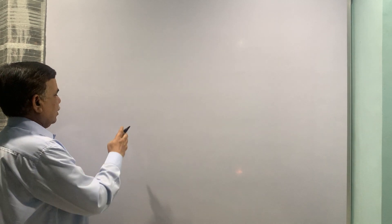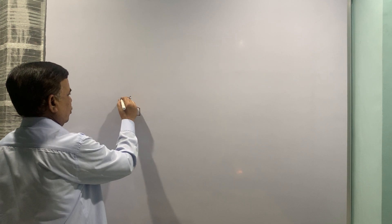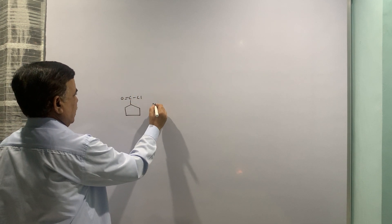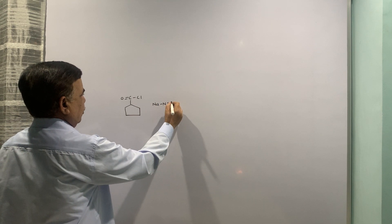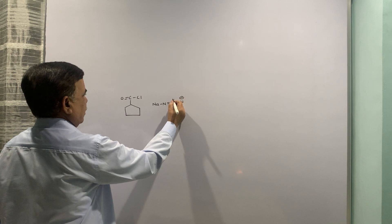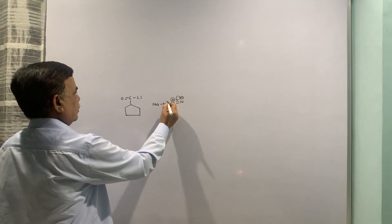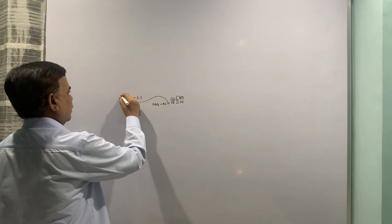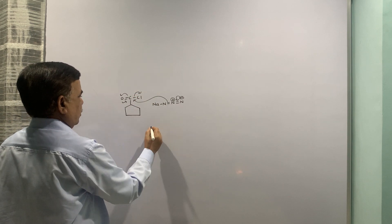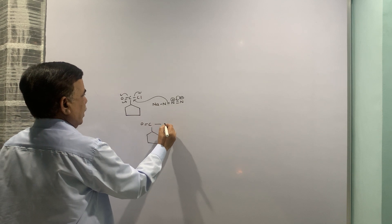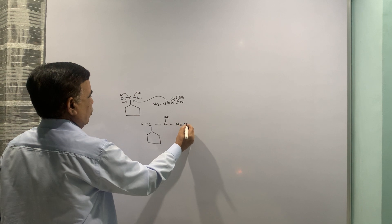Acid chloride is treated with sodium azide. This is the acid chloride which is shown over there. Sodium azide NaN3, let me put the entire structure. So you will be having CO, N, N, N2+.